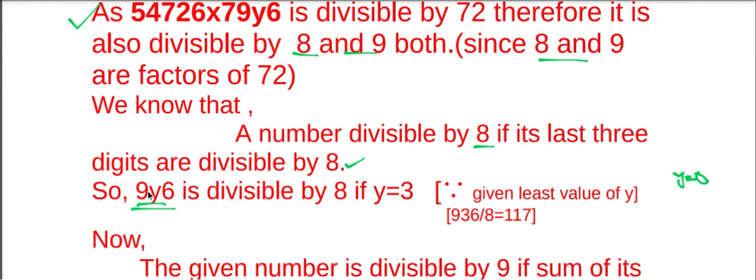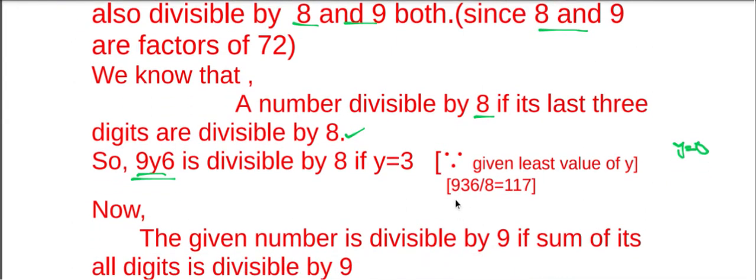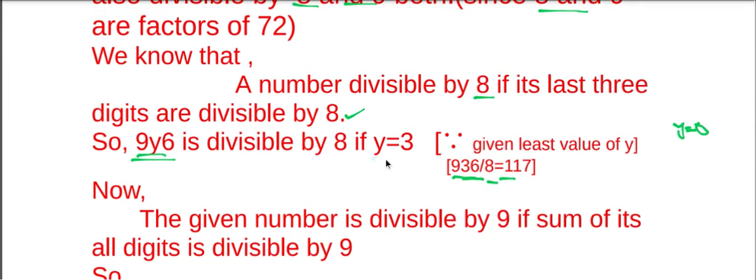Similarly, if we put 1, then also 916 and 926 are not divisible by 8. But if we put 3, then the number is divisible by 8. Here 936 is divisible by 8. Hence, the value of y is 3. The least value of y is 3.